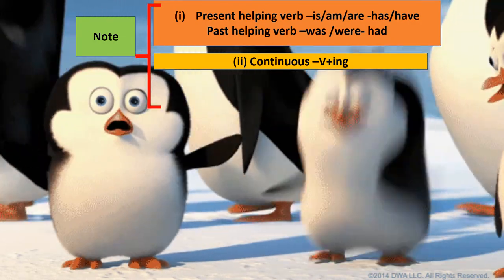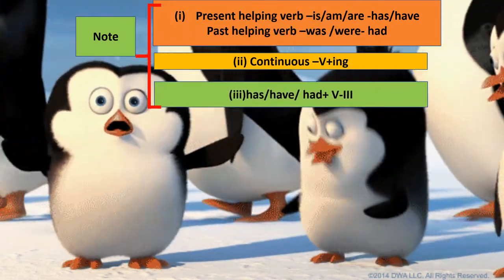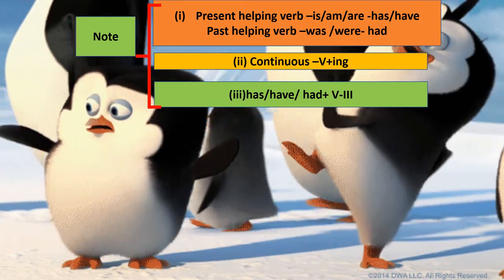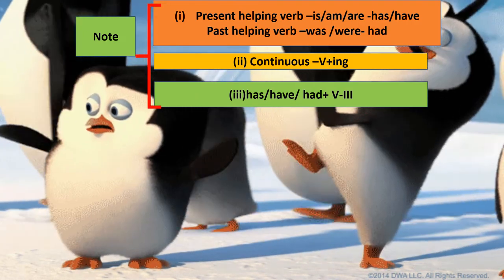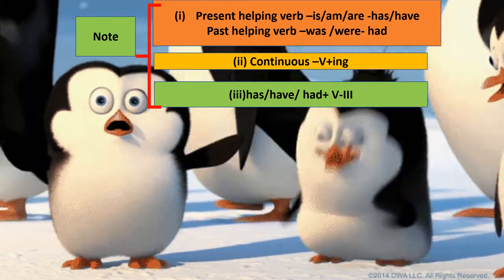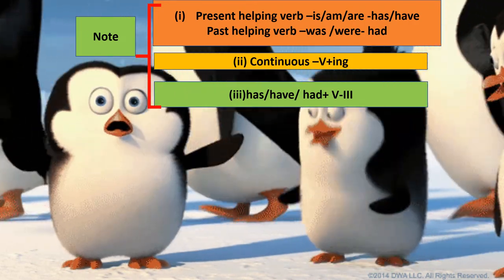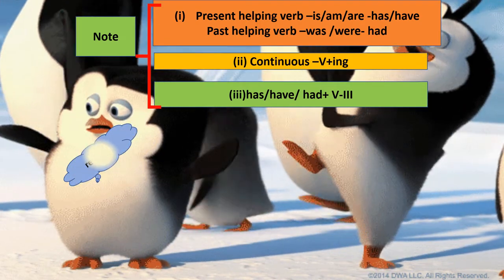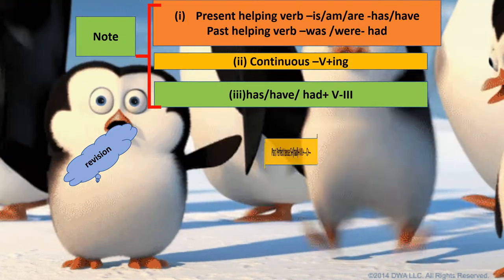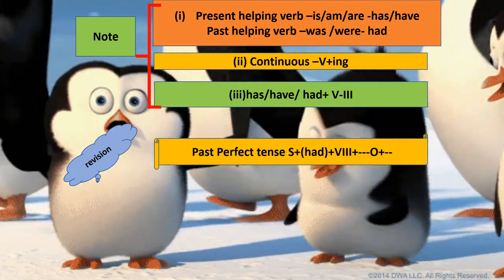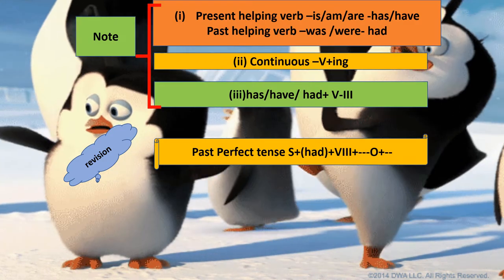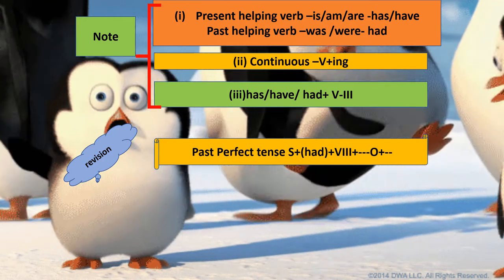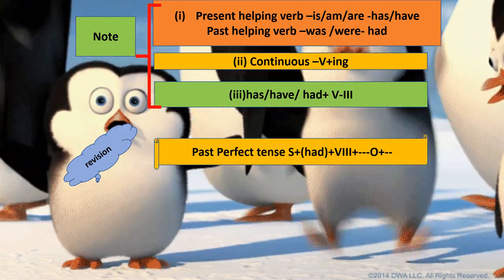Continuous means V+ING — the ING form shows continuity. For perfect tense, wherever has, have, or had is present, the verb will always be in the third form. If you use the verb in the second or first form after has/have/had, your tense is wrong. You have to be very careful with it.